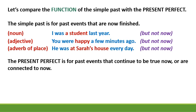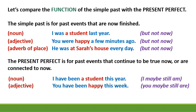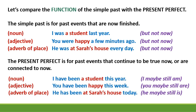The present perfect is for past events that continue to be true now or are connected to now. I have been a student this year — I maybe still am. You have been happy this week — you maybe still are. He has been at Sarah's house today — he maybe still is.